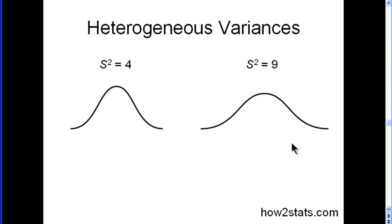When we look at heterogeneous variances, the samples look something like, for example, a variance of 4, but in this case the variance is 9, and we can see that the spread in the distribution is much larger.